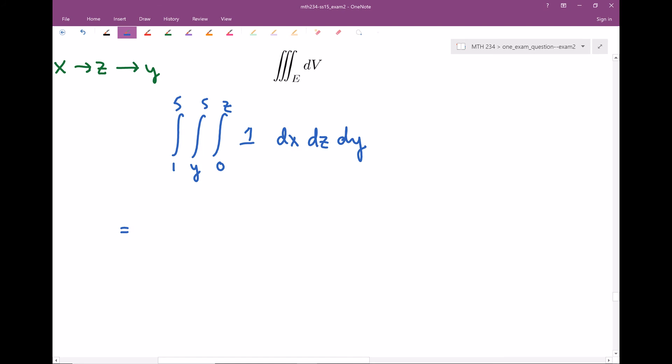Now we need to evaluate this thing. Let's evaluate the X integral first. These two stay the same, one to five, Y to five. When I integrate one with respect to X, I'm gonna get X. We're gonna evaluate that from zero to Z. I'll plug in Z and zero for my X. This is gonna be Z minus zero, or just Z.